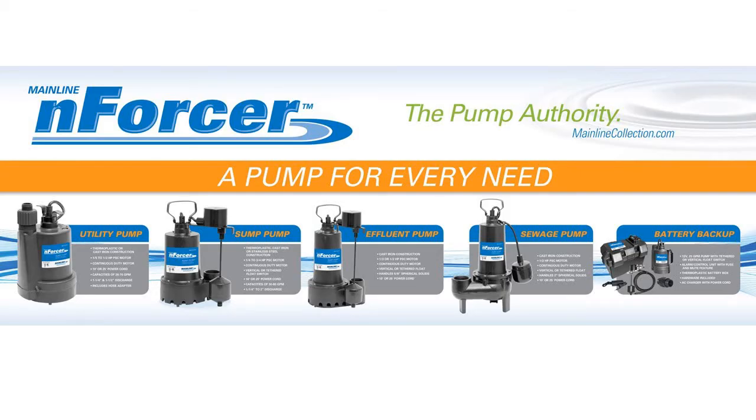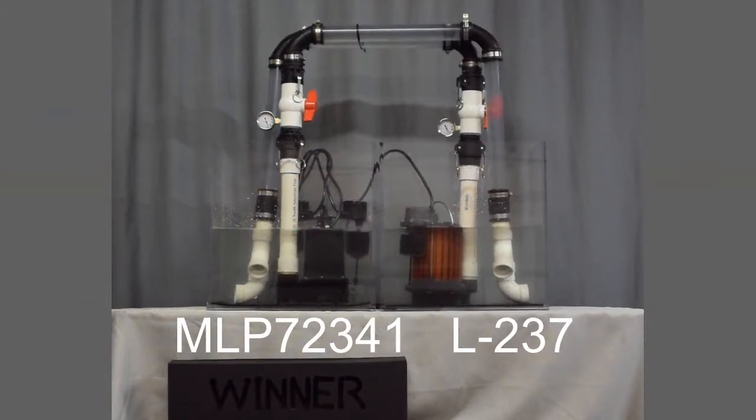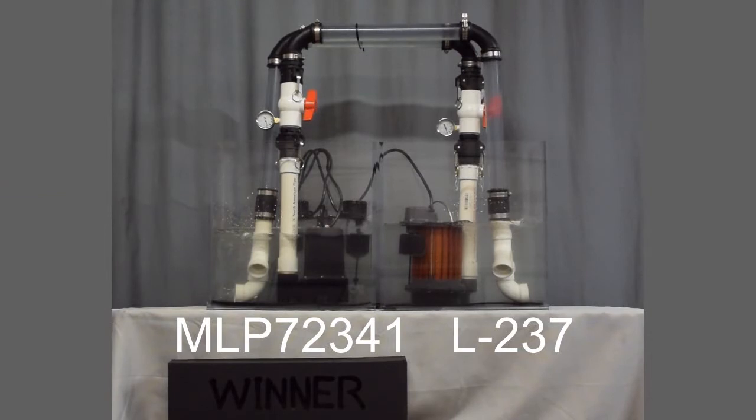This is a performance demonstration of the MLP72341 versus the Liberty 237. Both sump pumps are 3rd horsepower with vertical flow switches.